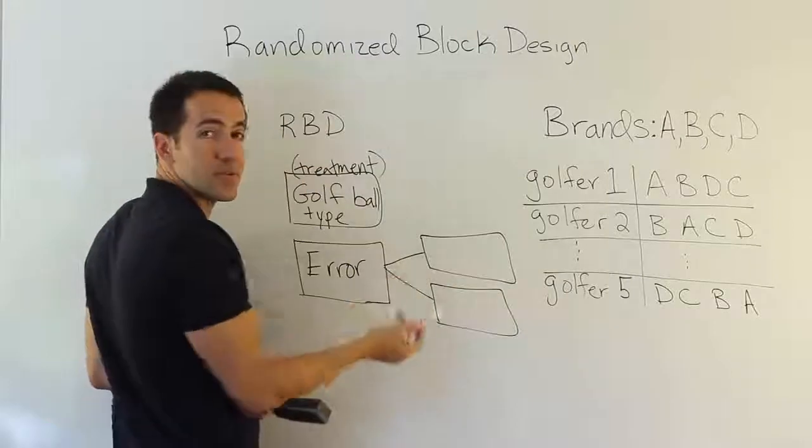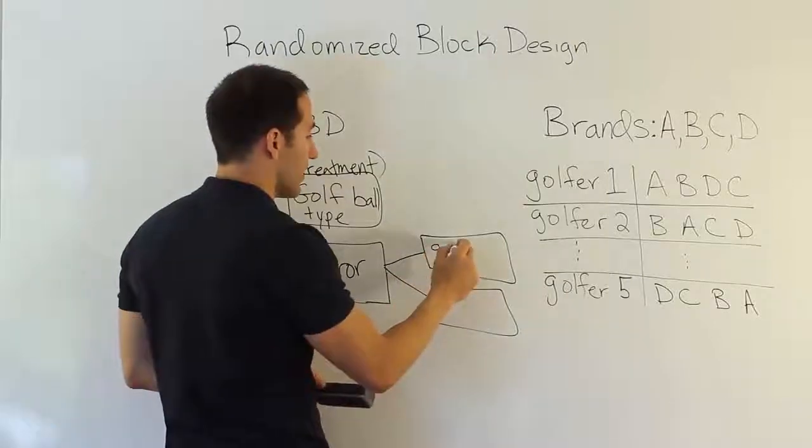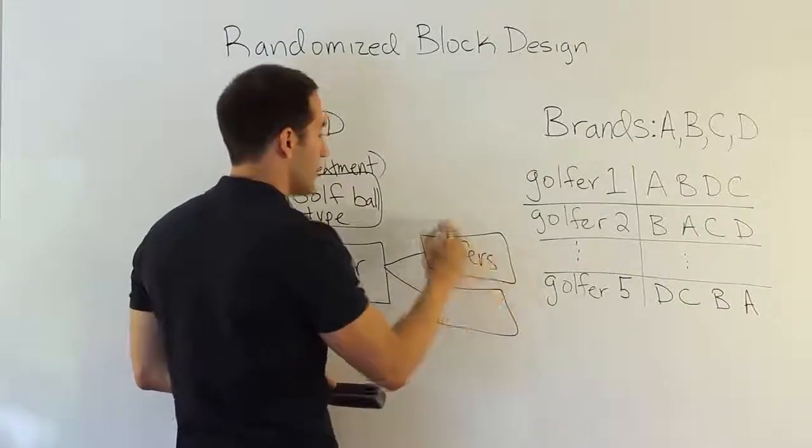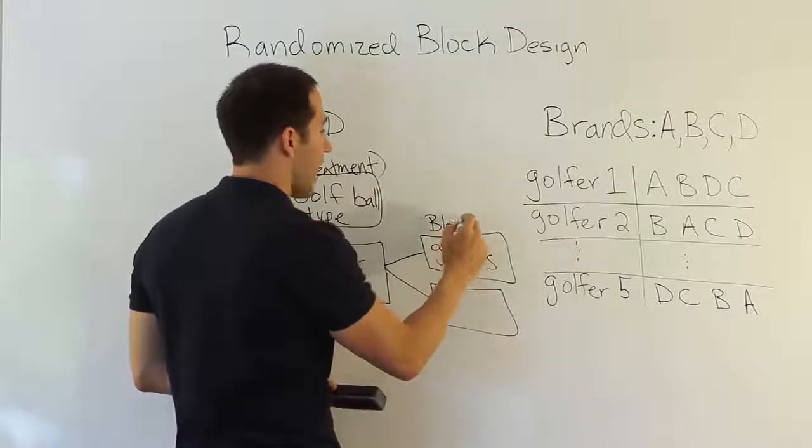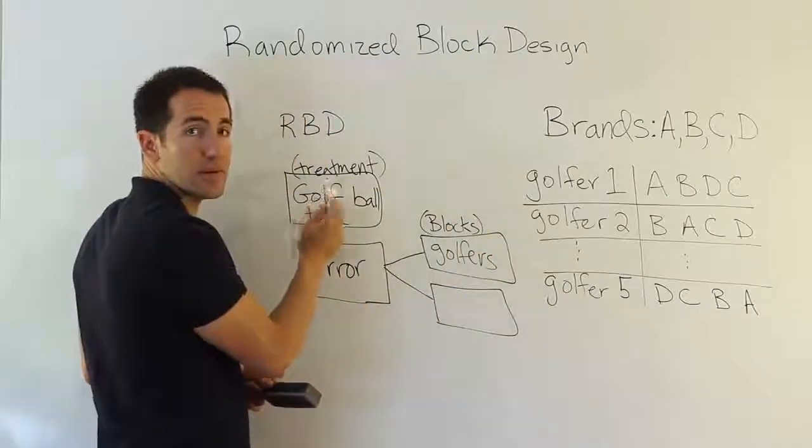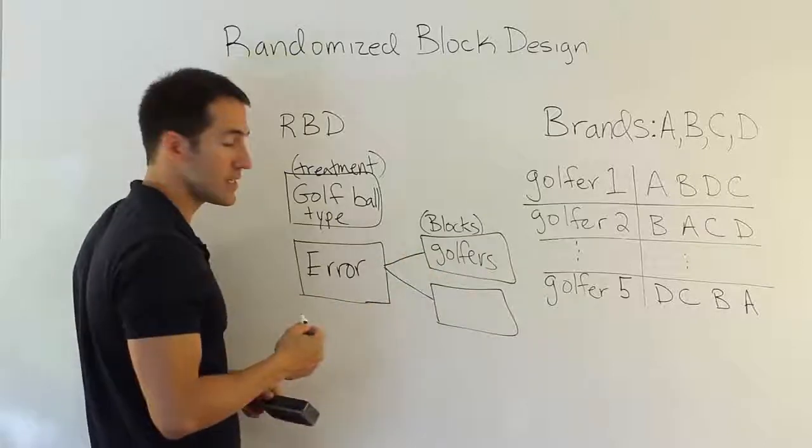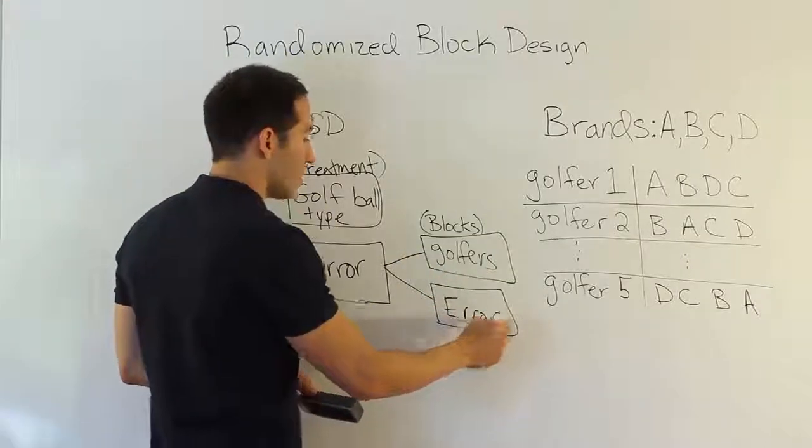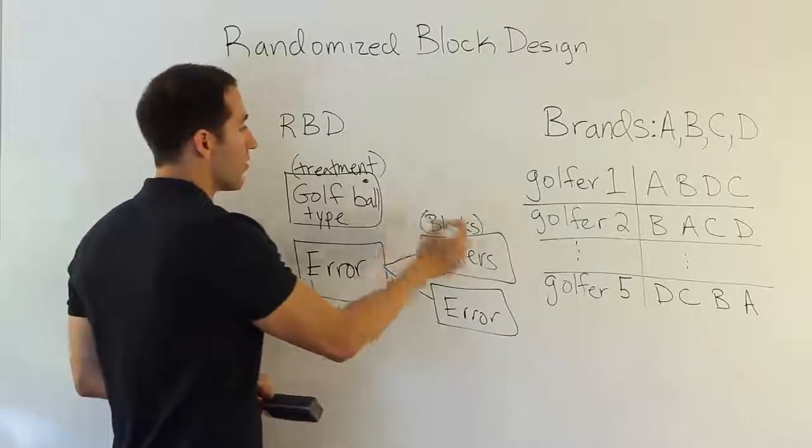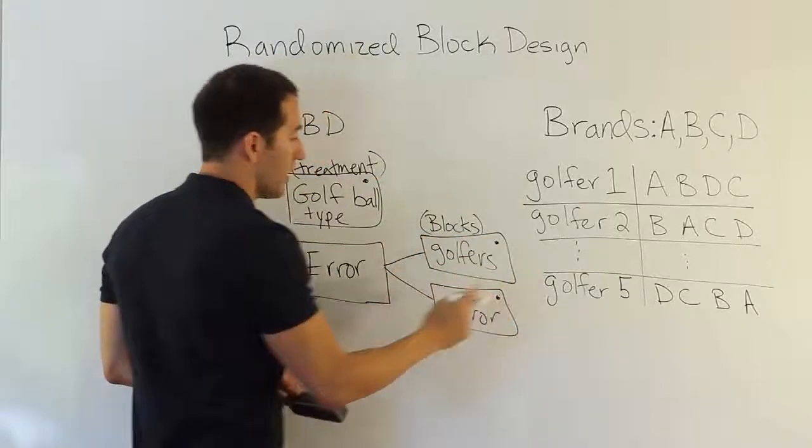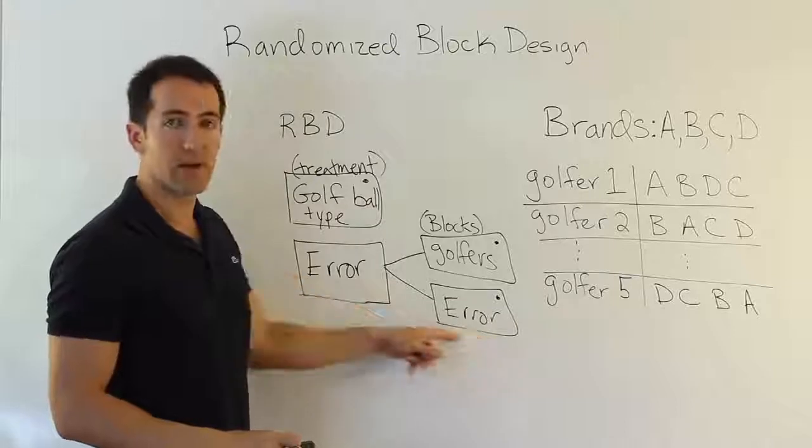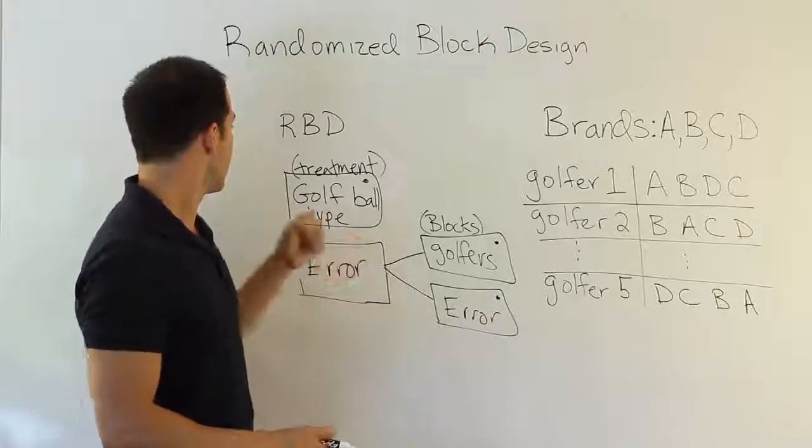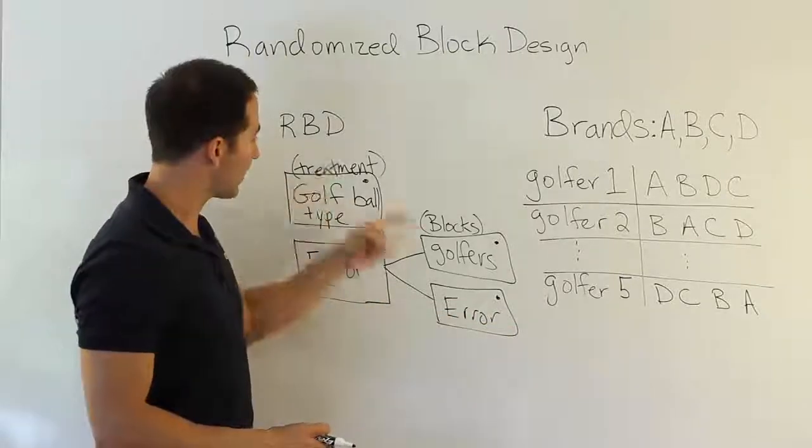In this case, we'd say maybe the golfers, which we'll call generically the blocks. Just like we call the balls the treatments, we're going to call the golfers the blocks. And then all the leftover stuff, the error. That's basically what we do. We end up having three components to the model then. We have the random error, the experimental error. We have the treatment, and we have the blocks.